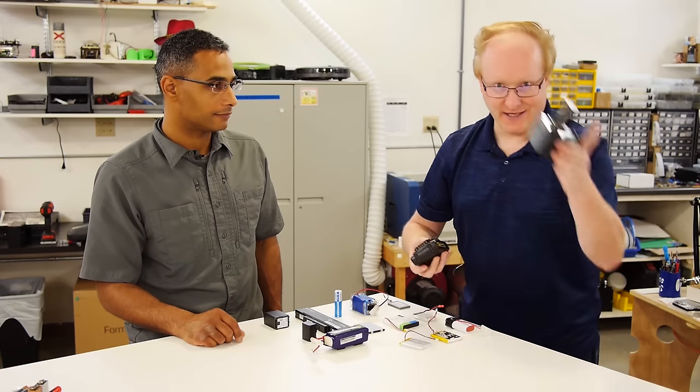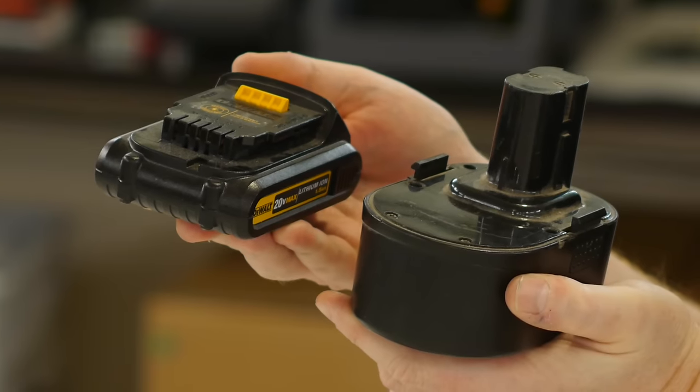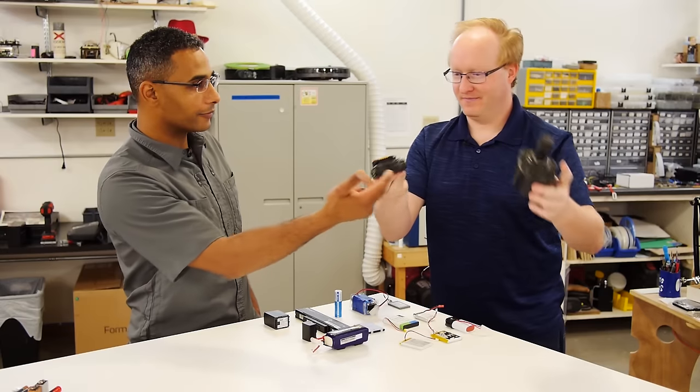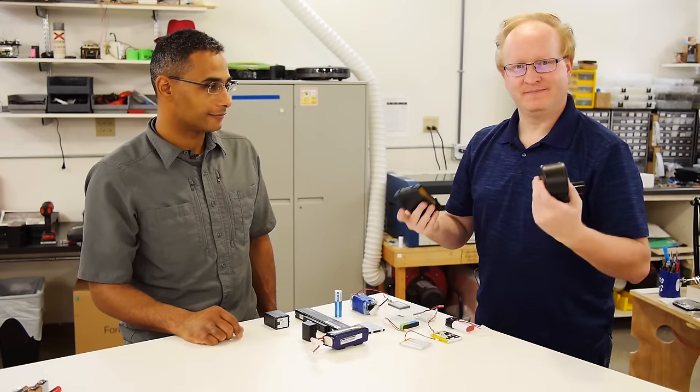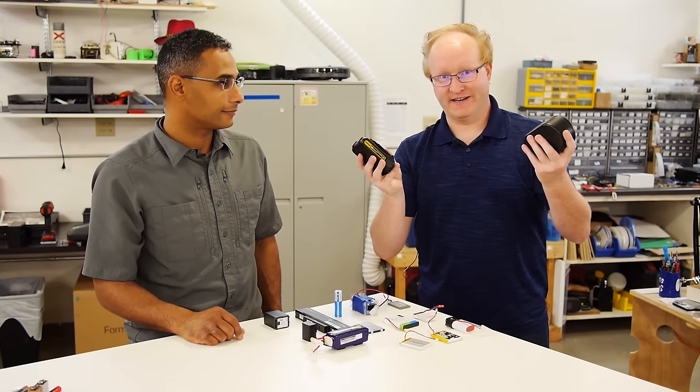Look at this. This is a nickel cadmium drill battery. Here's a lithium ion drill battery. 20 volts, 18 volts, huge difference. It's like twice the weight. Which one would you want to lug around on a job site?